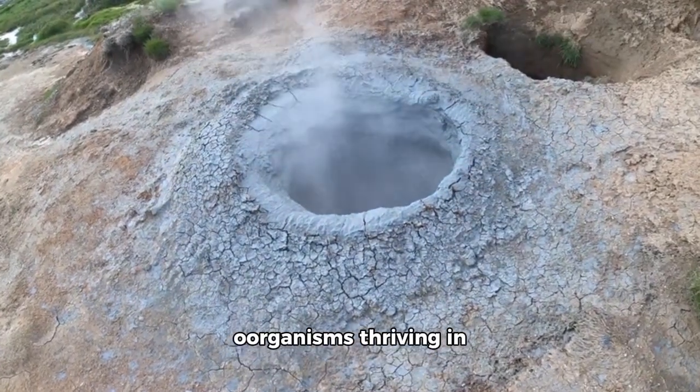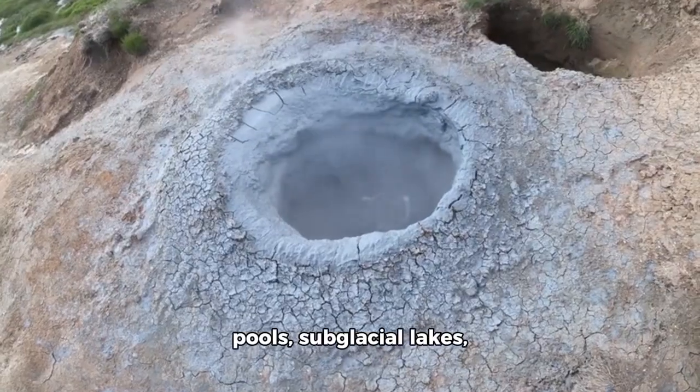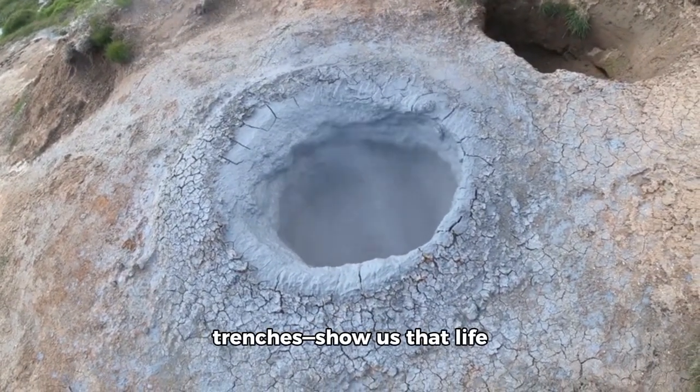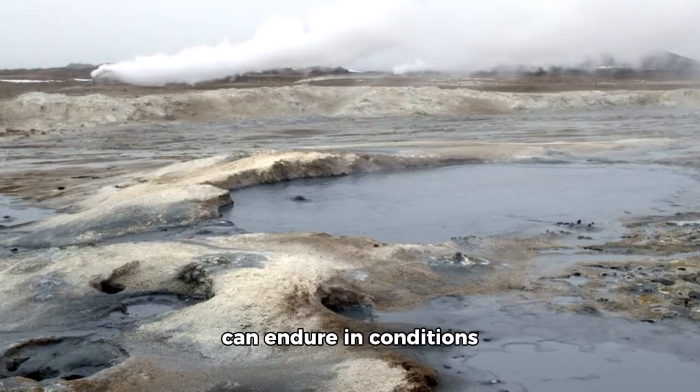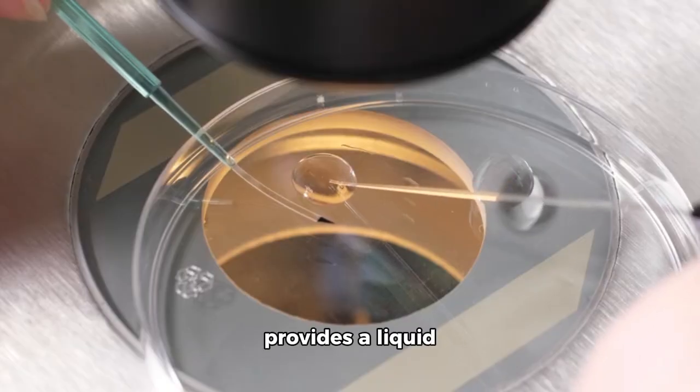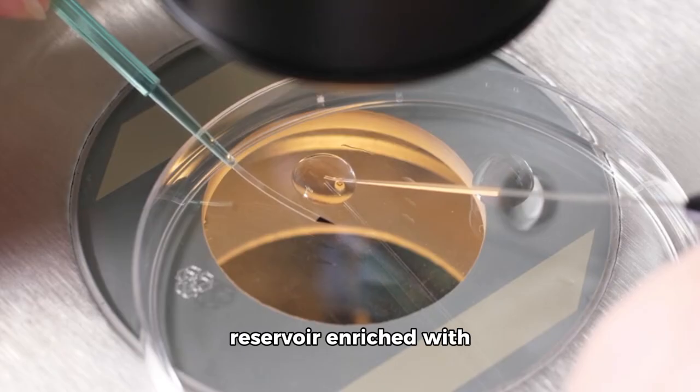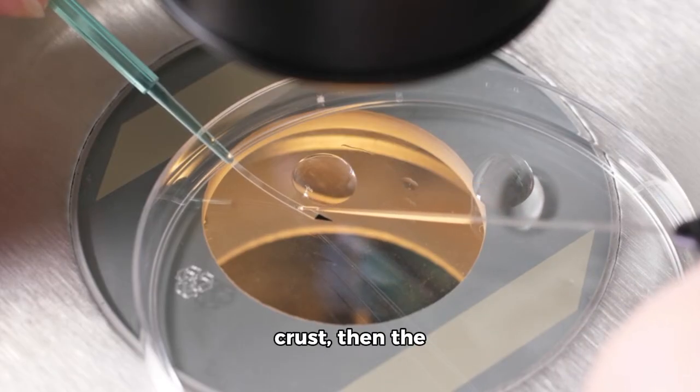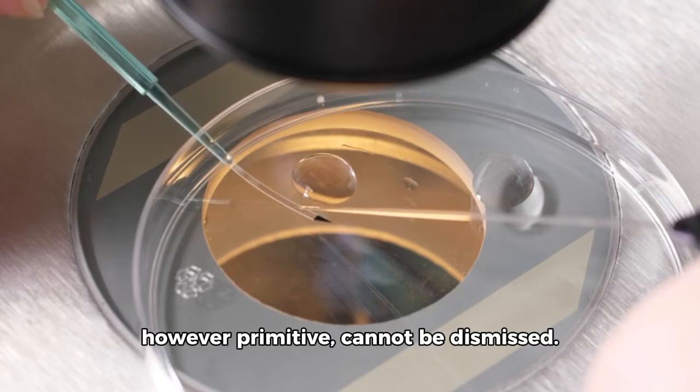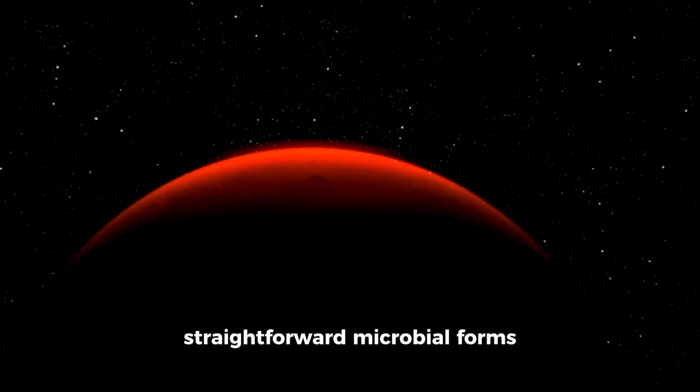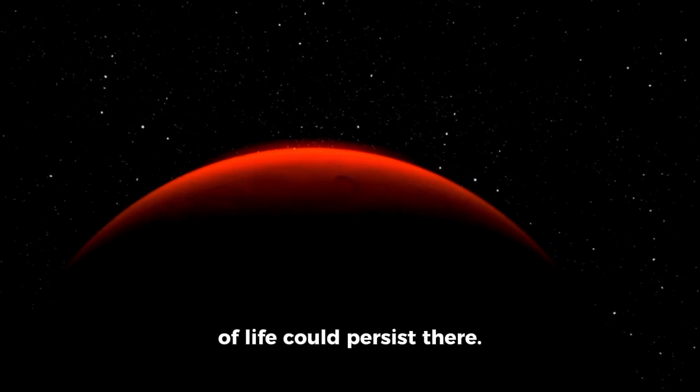Earth's extremophiles—microorganisms thriving in boiling vents, acidic pools, subglacial lakes, or dark ocean trenches—show us that life can endure in conditions once considered inhospitable. If Pluto's interior provides a liquid reservoir enriched with organics and shielded from radiation by a thick icy crust, then the possibility of life, however primitive, cannot be dismissed. It is not unheard of that simple microbial forms of life could persist there.